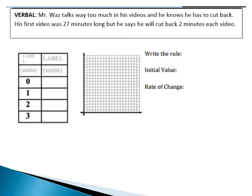My first video made was 27 minutes long, but I want to try and cut back and make these shorter. So to cut back, I'm going to try and eliminate two minutes from each video. Let's take this problem and represent it both graphically and as an equation and through a table. When we fill out a table, we have to think about what are the two things I'm talking about — the number of minutes in a video, and the number of videos. So my two labels are: number of videos, and minutes.